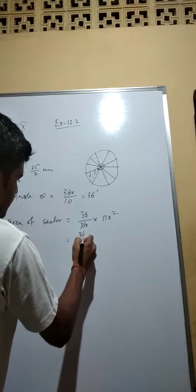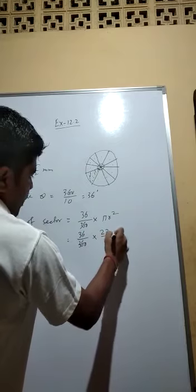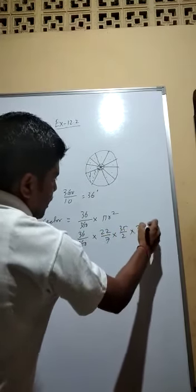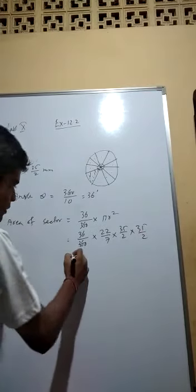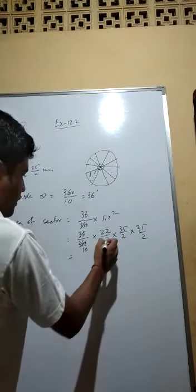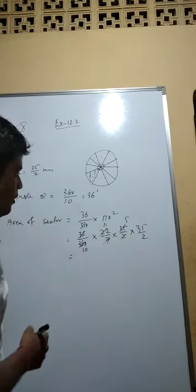So area of sector is equal to 36 by 360, pi is not given so 22 by 7, r is 35 by 2 square. I am writing here 2 times. So this 36 ultimately here 10, 7 if we cut this 22 it will be 11, no?